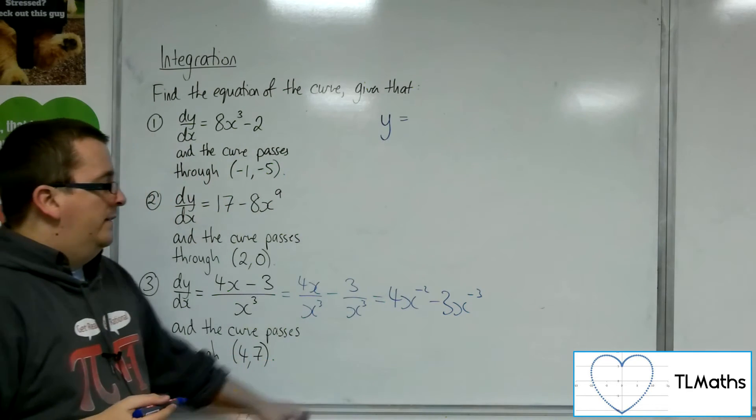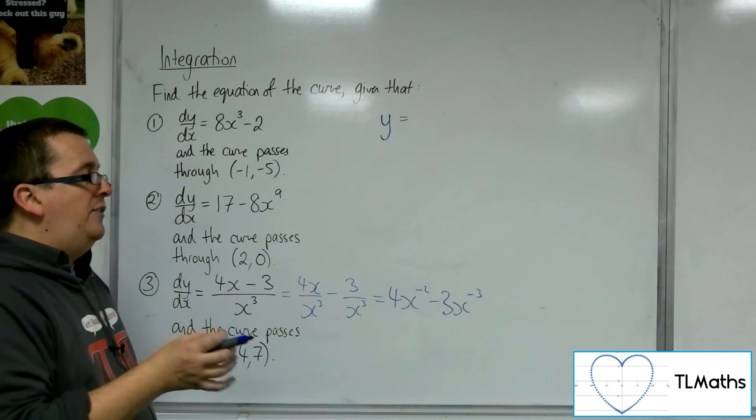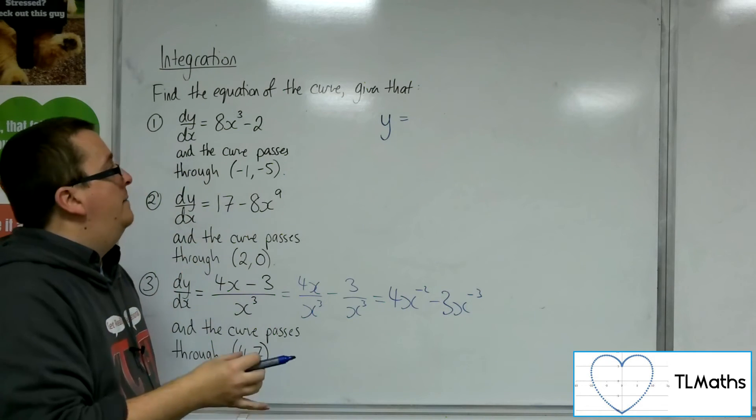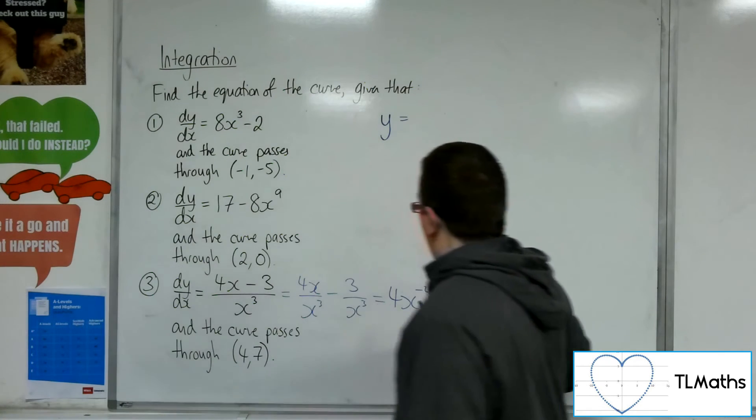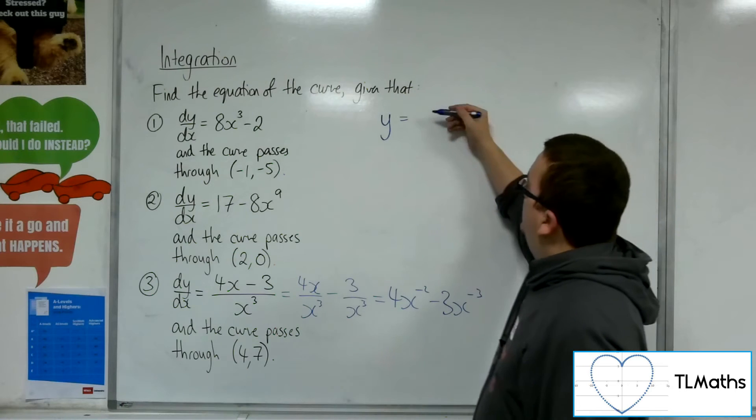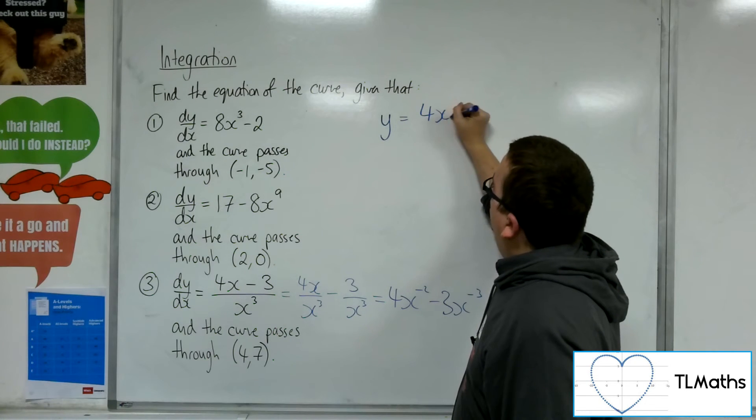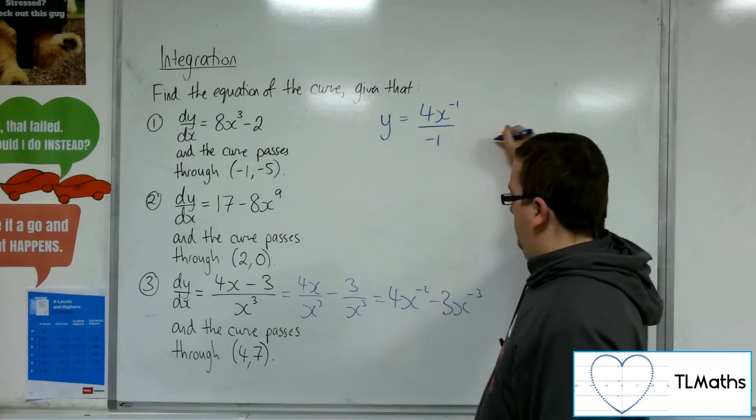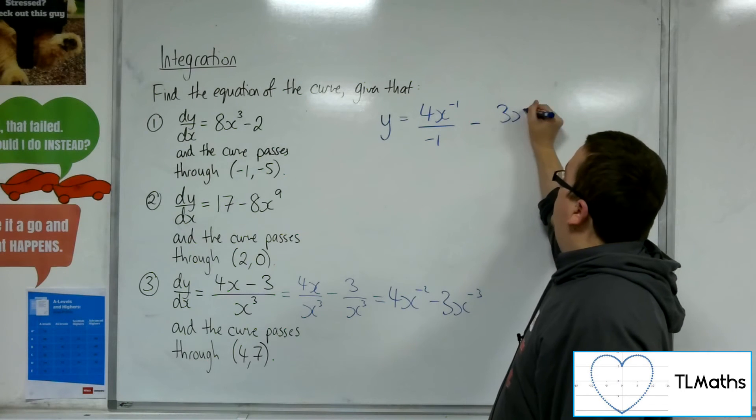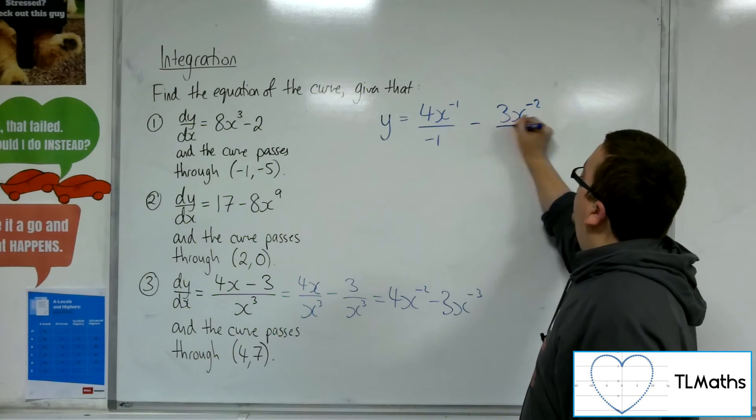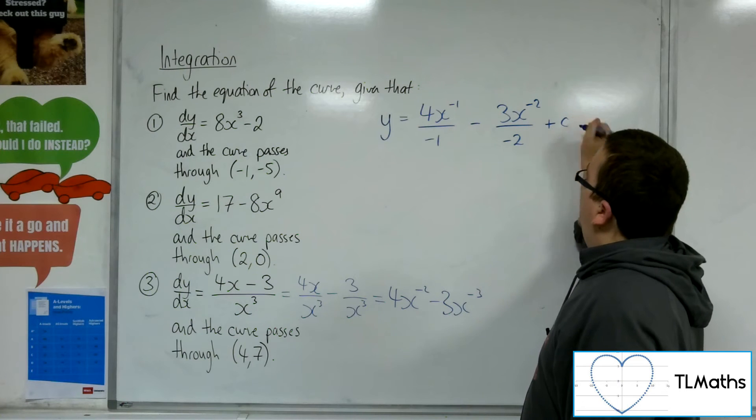So that is now ready for me to integrate as each of the pieces in the form ax^n. So I'm going to add 1 to the power. So 4x⁻¹ over -1. And then I'm going to add 1 to the power here. So I get -3x⁻² over -2 plus c.